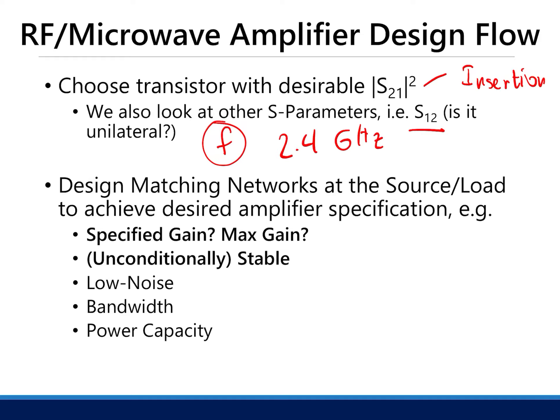After that, you need to check your specified gain. Do you need the specified gain? What is the maximum gain? Can you achieve the specified gain given the maximum gain? Next is the stability of your amplifier, which we will discuss in the succeeding slides. Other parameters to consider are low noise, high bandwidth, larger power capacity, and so on, but the most important ones are gain and stability.